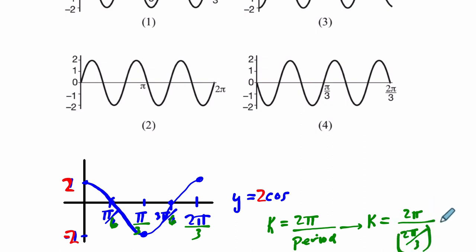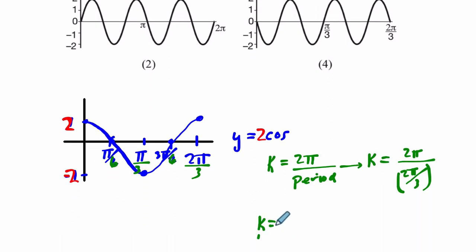We're divided by a fraction, so we keep change flip. So that's just, what does that mean? That just means k is equal to 2 over pi times, keep the first thing, change the sign from division to multiplication, and then flip by fraction here. These will cancel out, and k is just 3. That's where this 3 comes from. That's the coefficient of x.